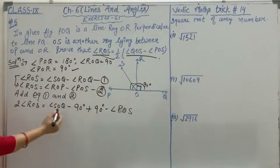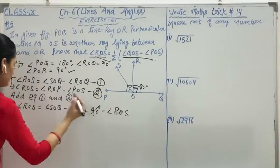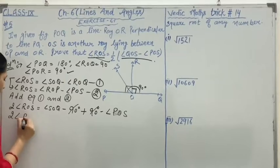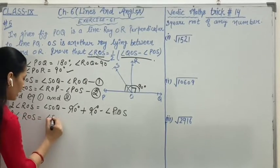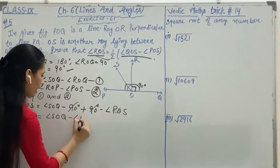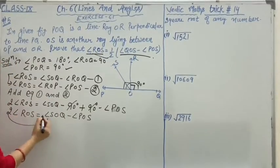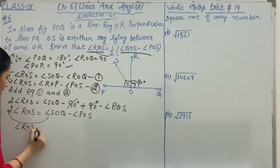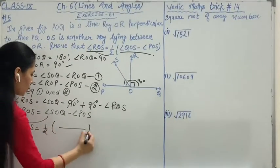Now what we get? Positive 90 and negative 90 cancel. So we get angle ROS equals angle SOQ minus angle POS. When we transpose 2 to the right hand side, we get the solution.